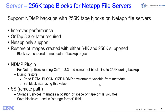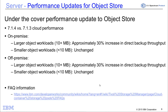To summarize: Spectrum Protect 7.1.4 introduced the ability to backup clustered NetApp devices, either from a cluster-wide perspective or a storage virtual machine perspective. We also introduced 256K tape blocks for NetApp filers. Another new enhancement in the Spectrum Protect server is performance updates for our object store. In version 7.1.3, we introduced container storage pools with on-premise or off-premise cloud storage pools. With the new release, we've enhanced performance for larger object workloads — up to 30% increase in direct backup throughput for both on-premise and off-premise cloud containers. The end user just needs to be at version 7.1.4 on their Spectrum Protect server.